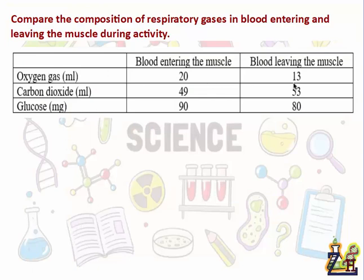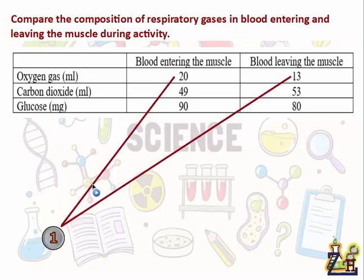Let's see an example. We have a table showing the amount of substances entering and leaving the muscle, like oxygen, carbon dioxide, and glucose. The question says: compare the composition of respiratory gases in blood entering and leaving the muscle during activity. We have to read the question carefully — they said compare only respiratory gases, meaning oxygen gas and carbon dioxide. Once again, here we have two things to compare: oxygen gas and carbon dioxide, each with two numbers.